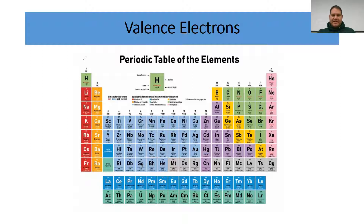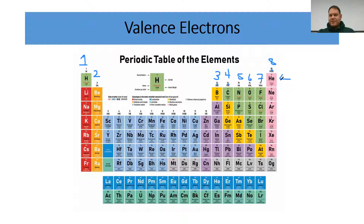Remember: Group 1 elements have one valence electron, Group 2 has two, Group 13 has three, Group 14 has four, then five, six, and seven. Group 18 ends in eight so it has eight valence electrons — the only exception is helium, which only has two. The rest of the noble gases in Group 18 all have eight valence electrons — that magical number eight for an octet.